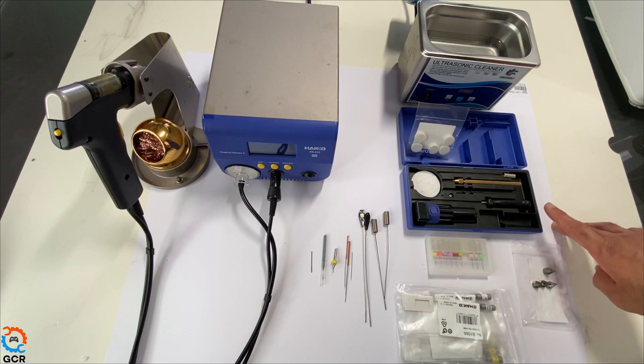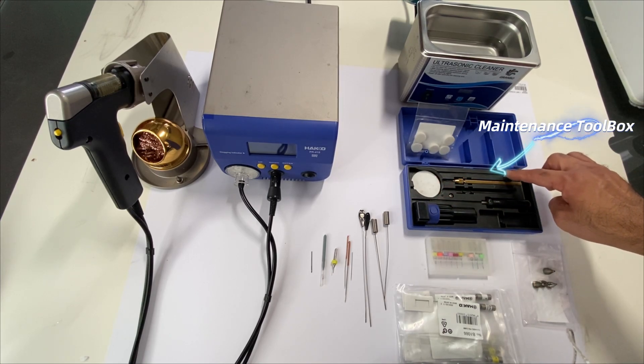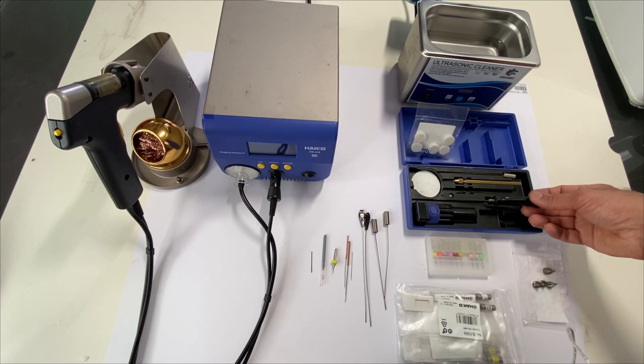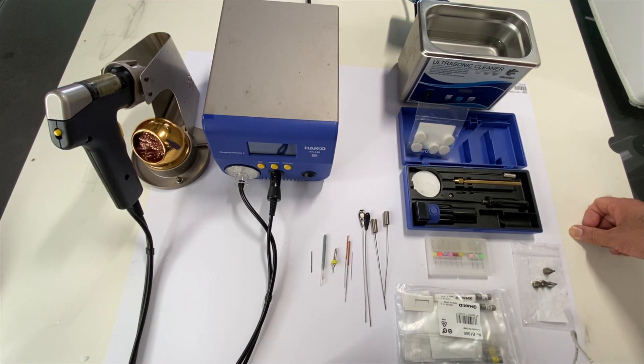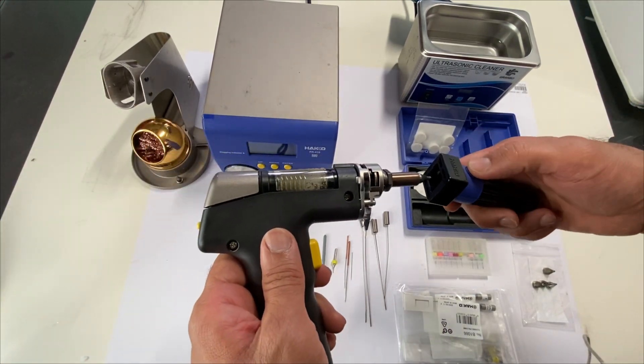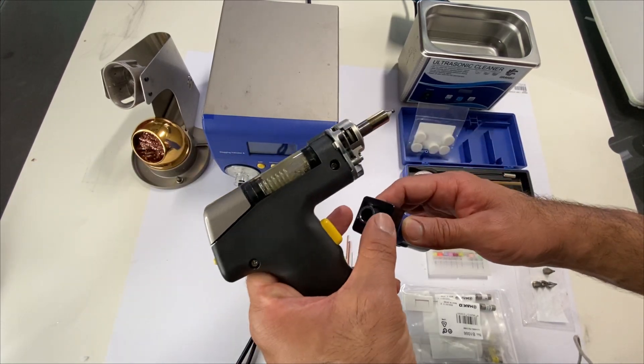The FR410 comes with a maintenance kit. The maintenance kit contains your cleaning pins, a long flathead screwdriver to clean up the heating element on your FR410 gun, a nozzle wrench to easily take out the nozzles and the nozzle element.